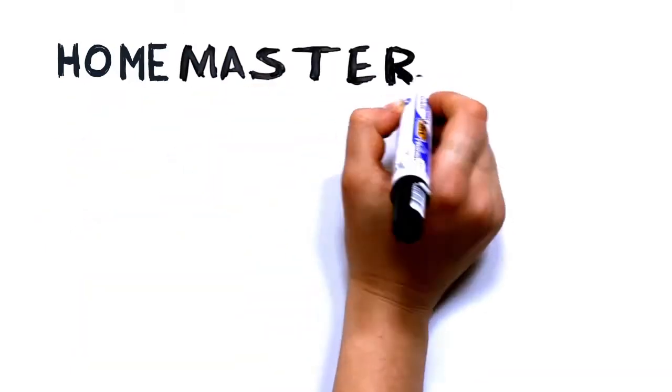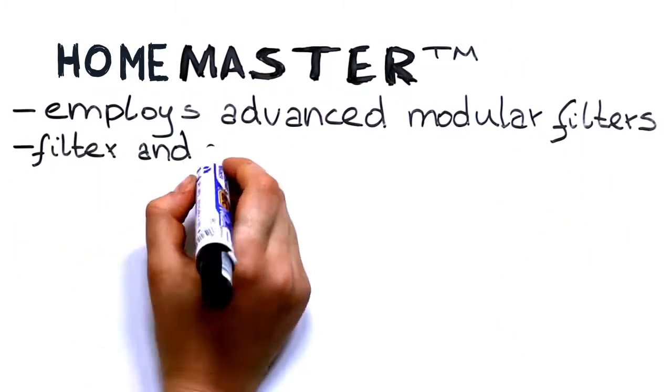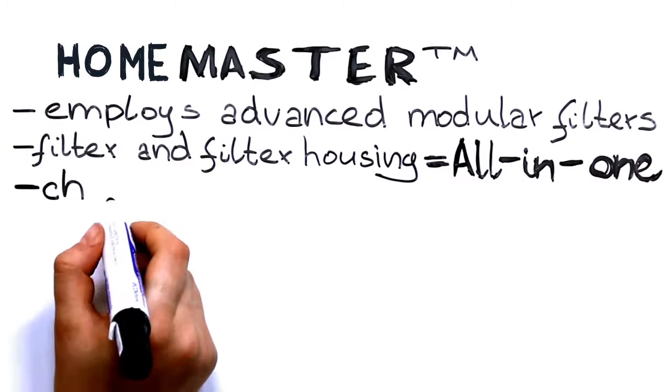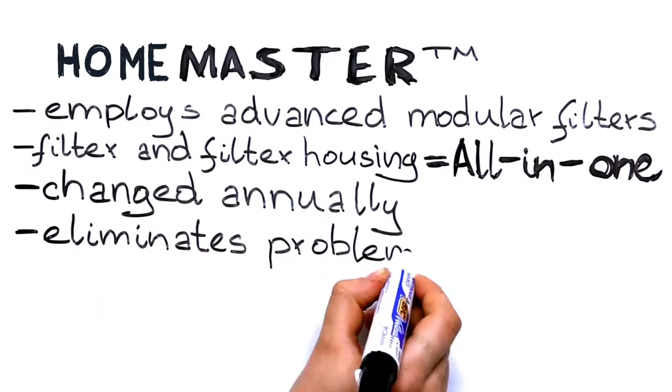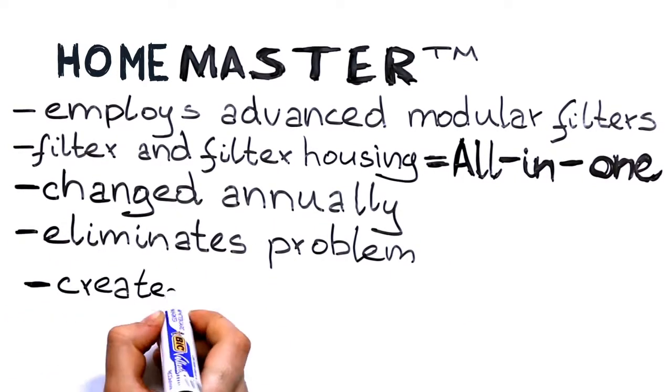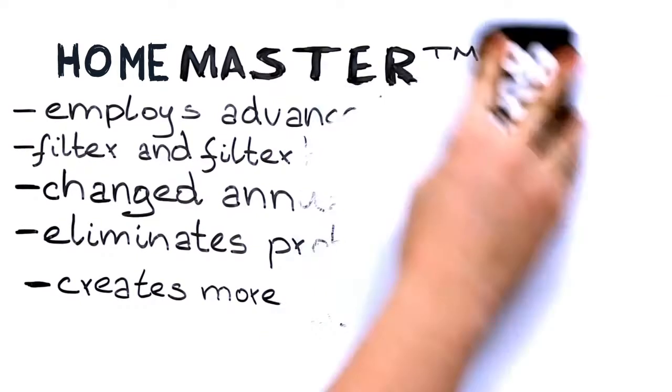Home Master System employs advanced modular filters where the filter and filter housing are all in one and changed annually, thus virtually eliminating this problem. You also create a more hygienic system by changing the housings more frequently.